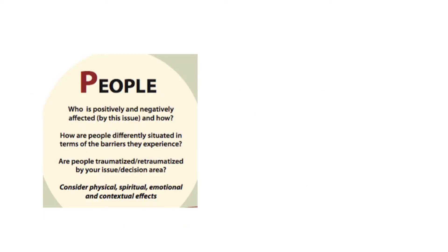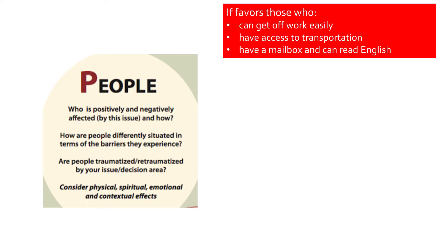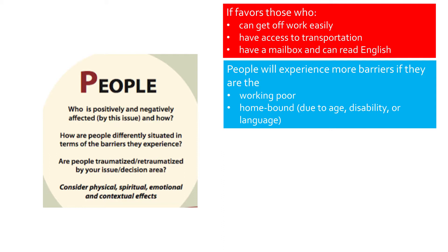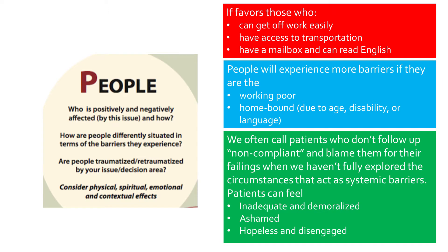Let's return to the original equity and empowerment lens and go through the prompts about connections to people. The first question asks who is positively and negatively affected by this intervention and how. In this case, the intervention favors those who can get off work easily, those who have access to transportation, and those who have a mailbox and can read English. The next question asks how people are differently situated in terms of barriers — particularly the working poor or those homebound due to age, disability, or language. Finally, we ask if people are traumatized by the decision area. We often call people non-compliant and blame them for their failings when we haven't fully explored systemic barriers, leaving people feeling inadequate, demoralized, ashamed, hopeless, and disengaged.